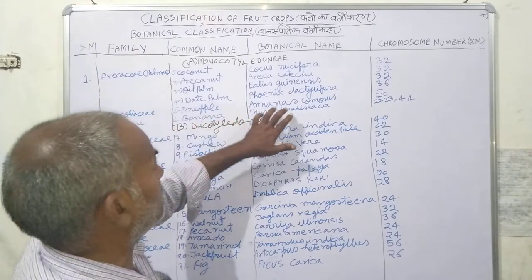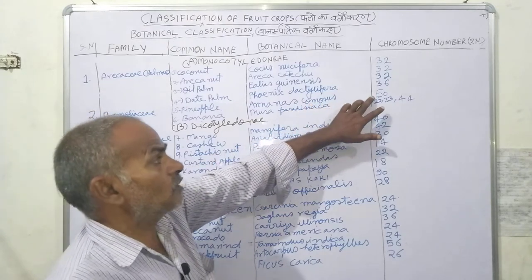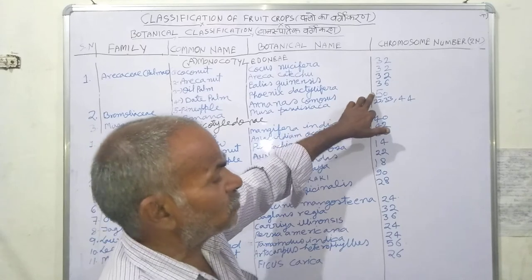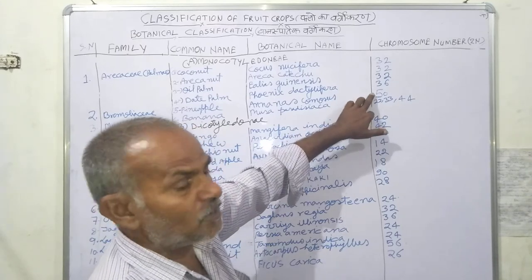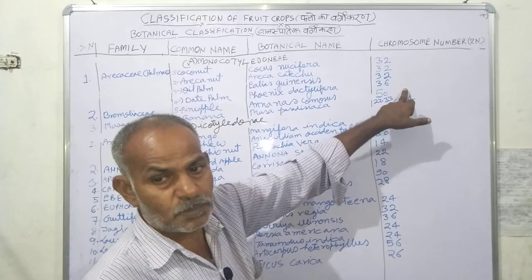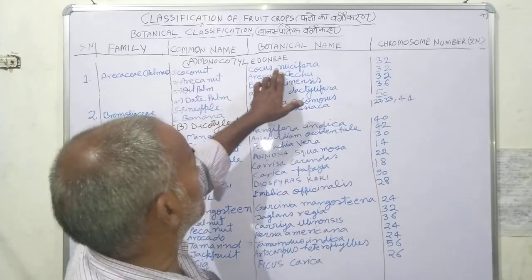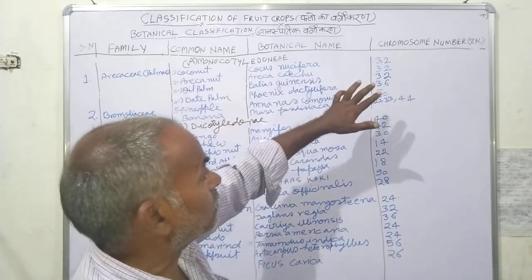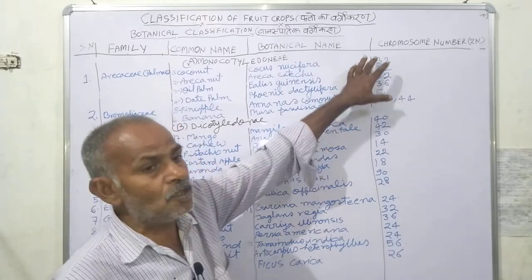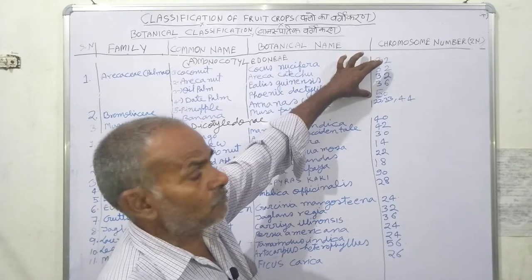Regarding pineapple, its botanical name is Ananas comosus. The diploid chromosome number is 50, the haploid number is 25, and there is also a triploid form with chromosome number 75.